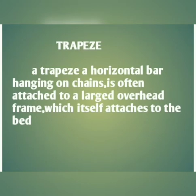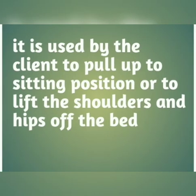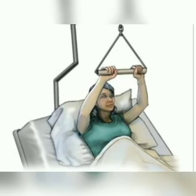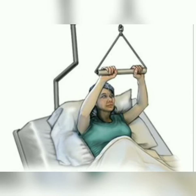A trapeze is a horizontal bar hanging on chains, often attached to a large overhead frame which itself is attached to the bed. It is used by the client to pull up to a sitting position, to lift the shoulders off the bed, and is mainly used for bed exercises.